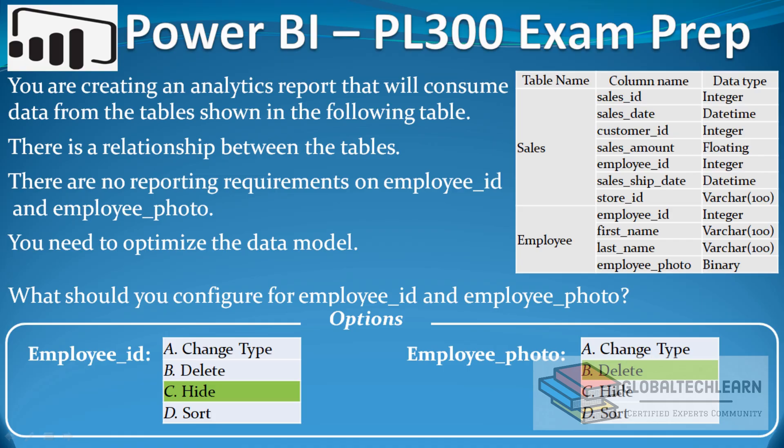Now let's go back to our question. For the Employee ID field, we hid it on the report, and for Employee Photo, we deleted this field from the model. So these two are the correct answers.